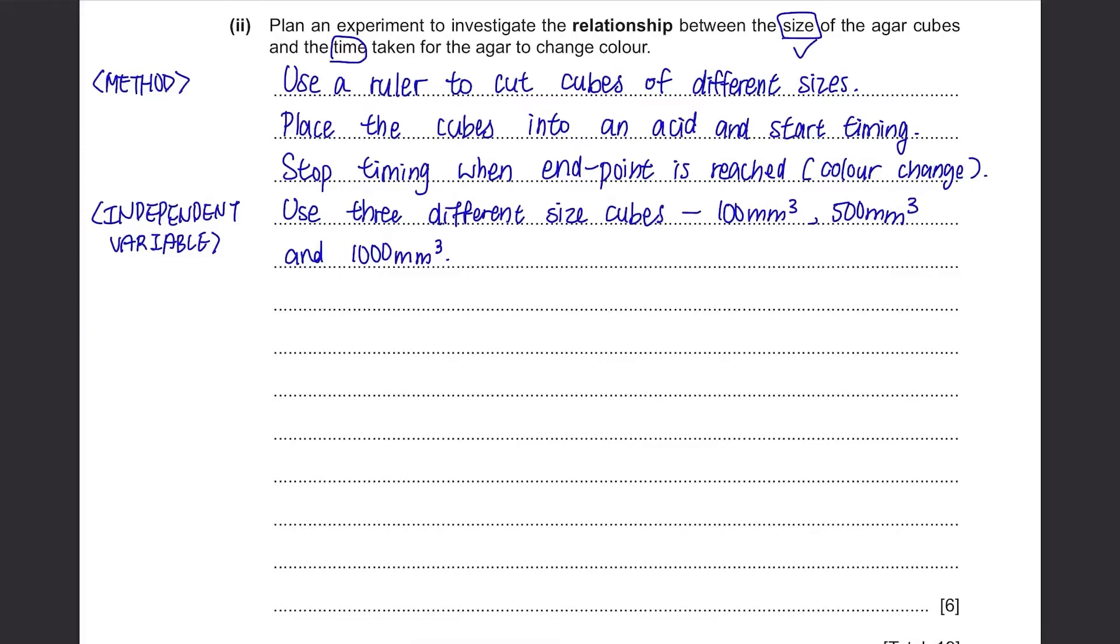Now we have to write about the variables that need to be kept constant. Firstly, it's a diffusion and diffusion is affected by the temperature. So keep the temperature constant, maybe by using a thermostatically controlled water bath. Using this thermostatically controlled water bath is in almost every question, so maybe in your exam, you can write this point if you see that there is a connection with the temperature. Then of course, the acid that you're going to use should be of same concentration and volume, and also the type of agar cubes that you're using should be the same. One last point is that the shape of agar cubes should be the same as well, because if some of them are cubes and some of them are spheres, they're obviously going to have different results.